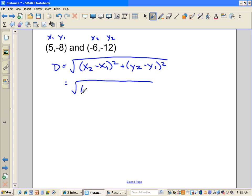Square root. Negative 6 is my X2. Subtract 5 squared. Plus negative 12. Again, minus a negative 8 squared. When you subtract a negative, that becomes plus, equals square root. Negative 6 minus 5, well, that's negative 11. We're going to square that.